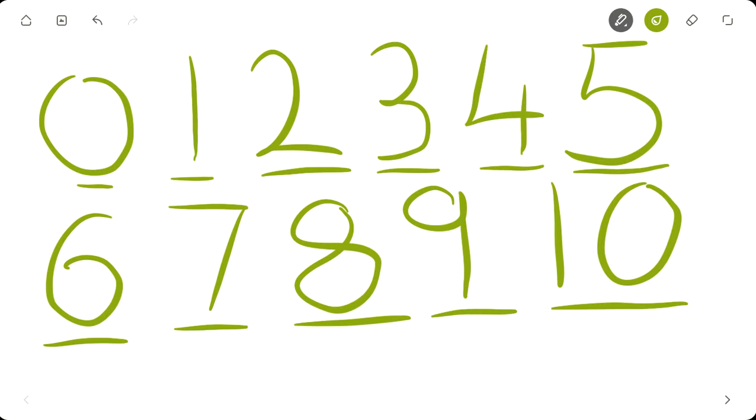0 represents nothing, so you don't count any fingers when you say 0. But when you start from 1, you hold 1 finger up, and then when you count 2, you hold 2 fingers up. You count 3, hold 3 fingers up. 4, 5, 6, 7, 8, 9, 10. And you realize that you have 10 fingers.